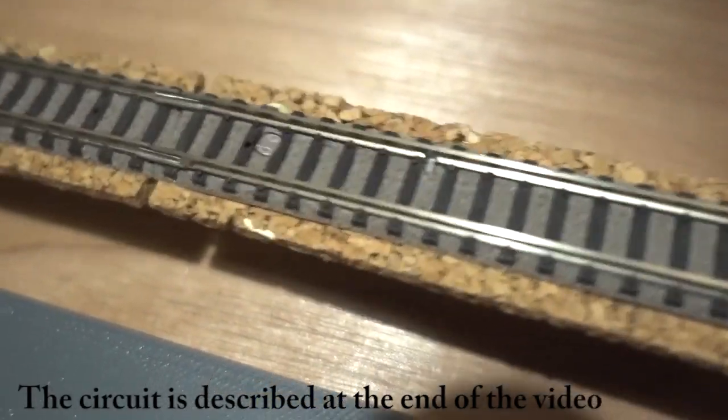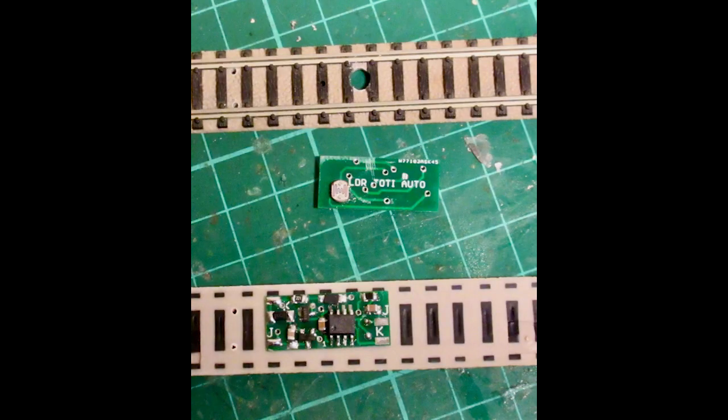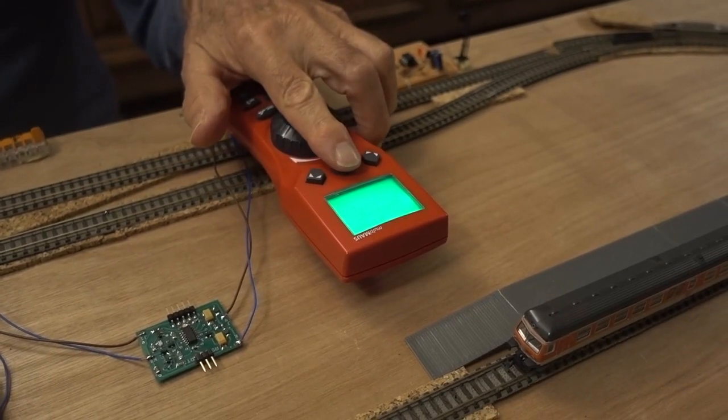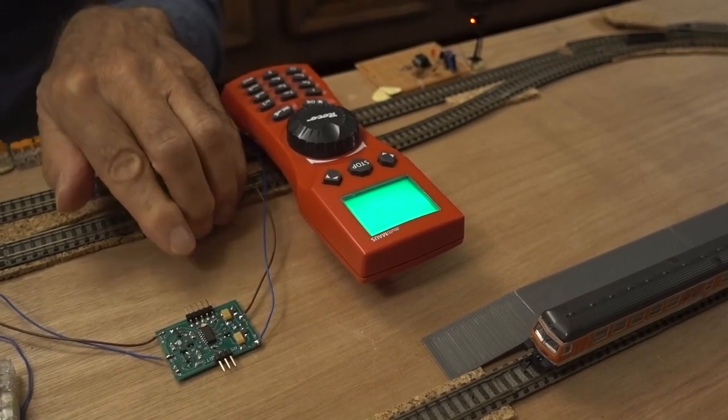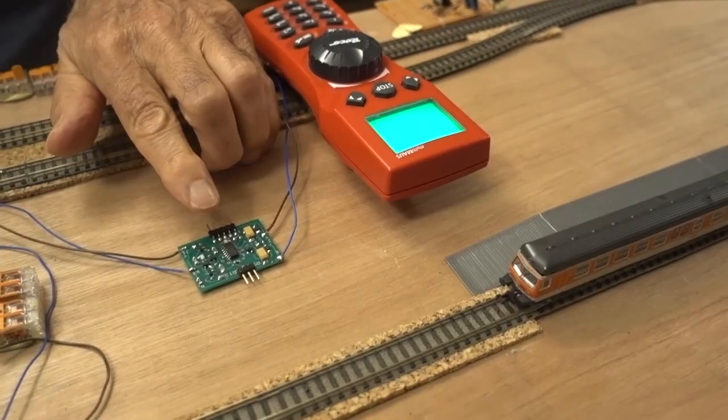And the LDR is on the PCB looking through the track. I'm turning on the DCC power, which starts the automation sequence in the DCC controller.